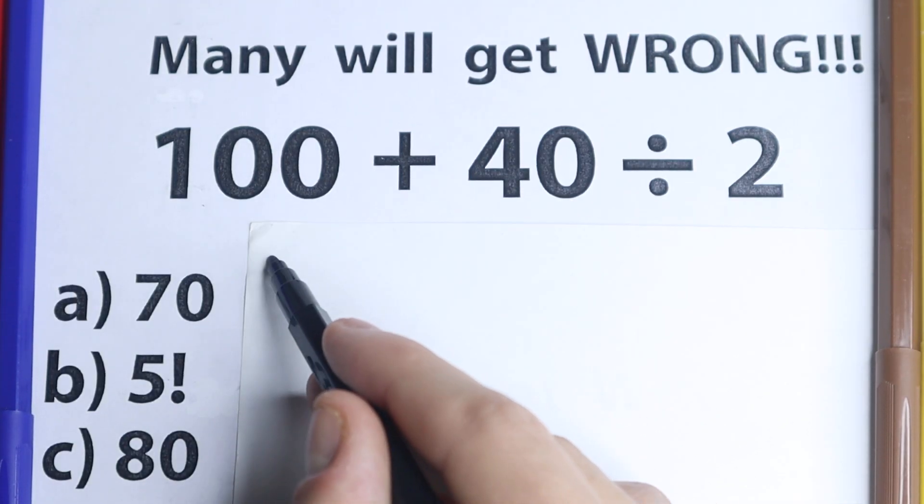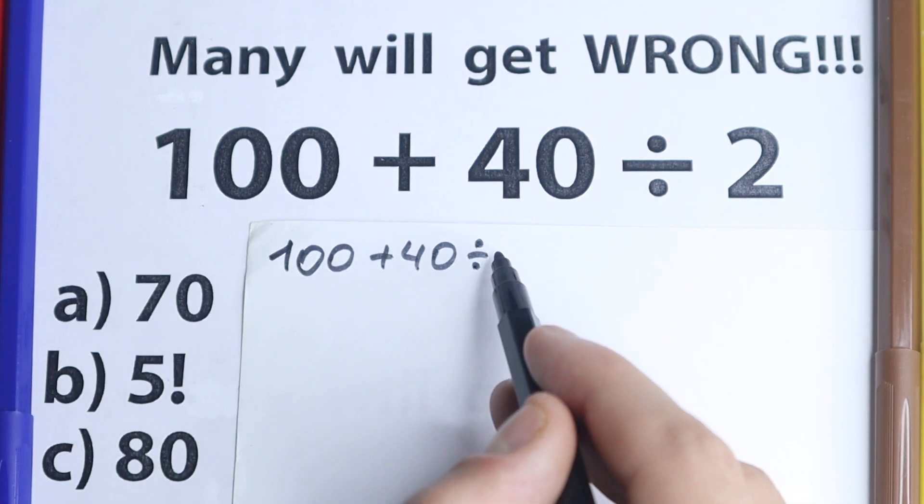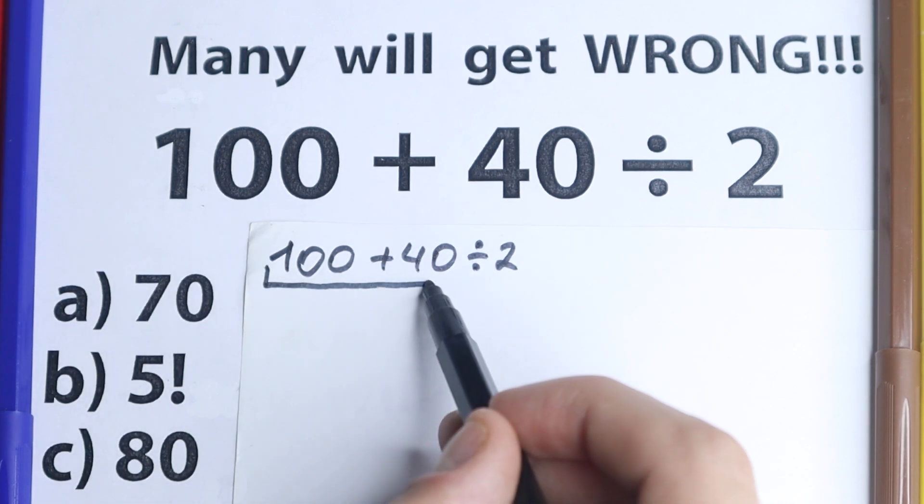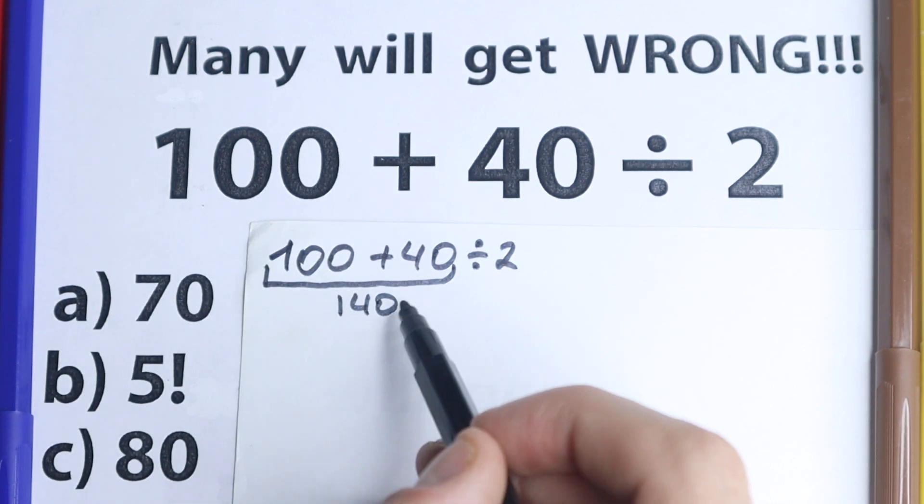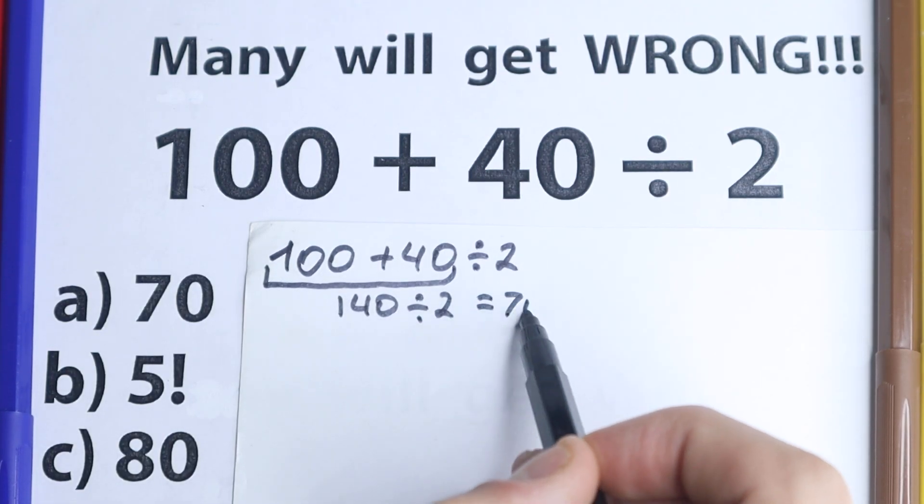Before solving this, I want to start with this solution. A lot of students solve it like that: we have 100 plus 40 divided by 2. They say, 100 plus 40 equals 140, of course, and divide it by 2, this is the same like 14 divided by 2, which is 70.